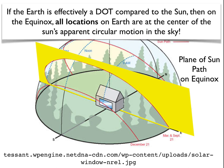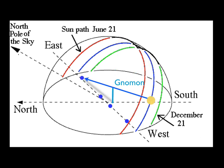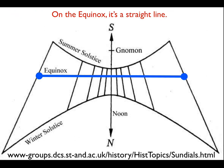This is really tough to get your head around — I had a hard time understanding it myself. Since the Sun is tracing a perfect circle and we're at the center of that circle, the shadows are all in a straight line. This is very counterintuitive, because we would normally predict a curve. Most of the year the path of shadows is curved, but on the equinox the path of the shadows is a straight line.